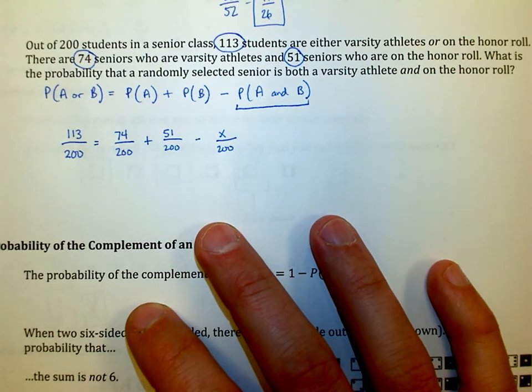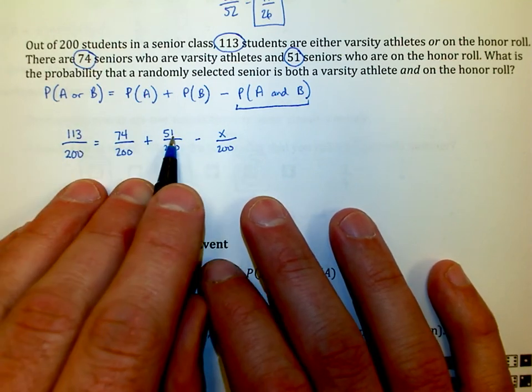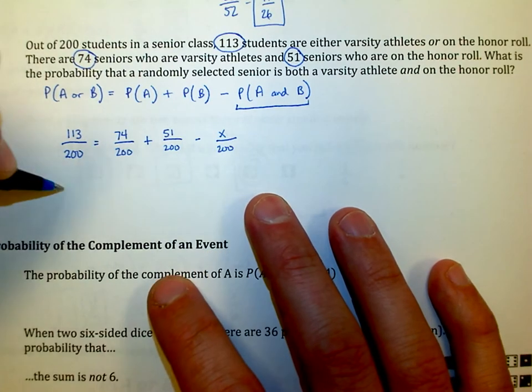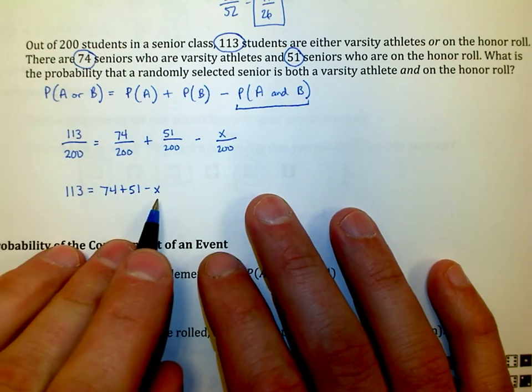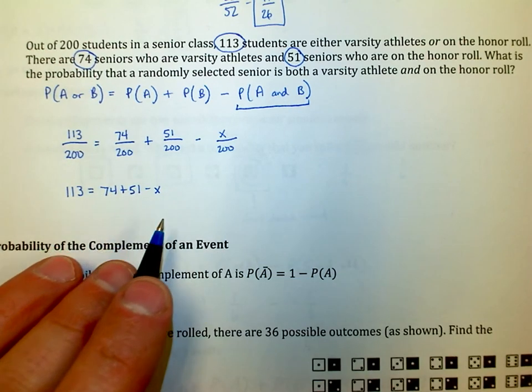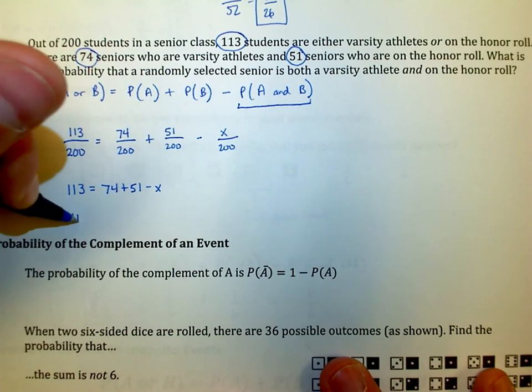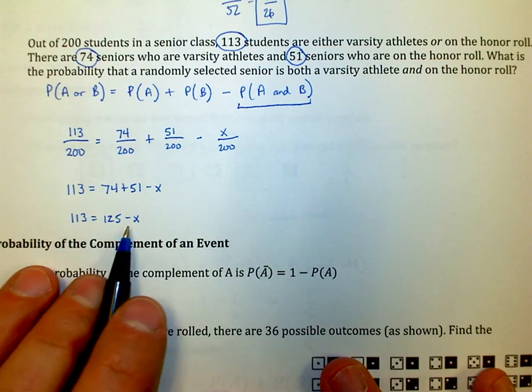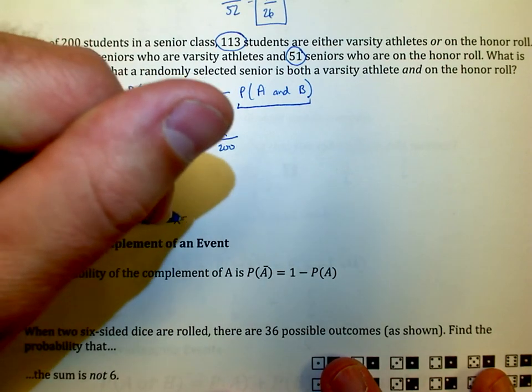What I need to do then is 74 plus 51 minus some number has to add up to 113. Let's say it that way: 74 plus 51 minus some number is equal to how many out of 200 are both honor roll and varsity athletes. On my calculator, I'm going to take 74 plus 51, that gives me 125. 113 is equal to 125 minus x. Now I need to solve for x, and I can see that 125 minus 113 is going to be 12, so x equals 12.